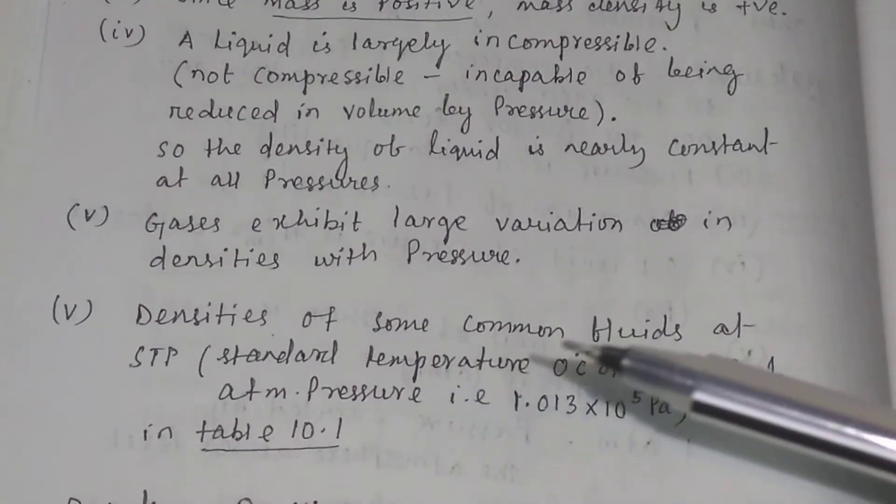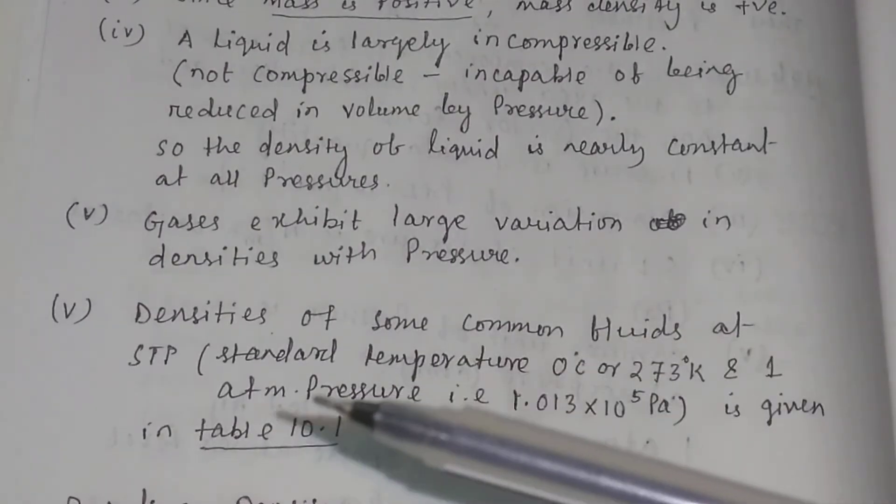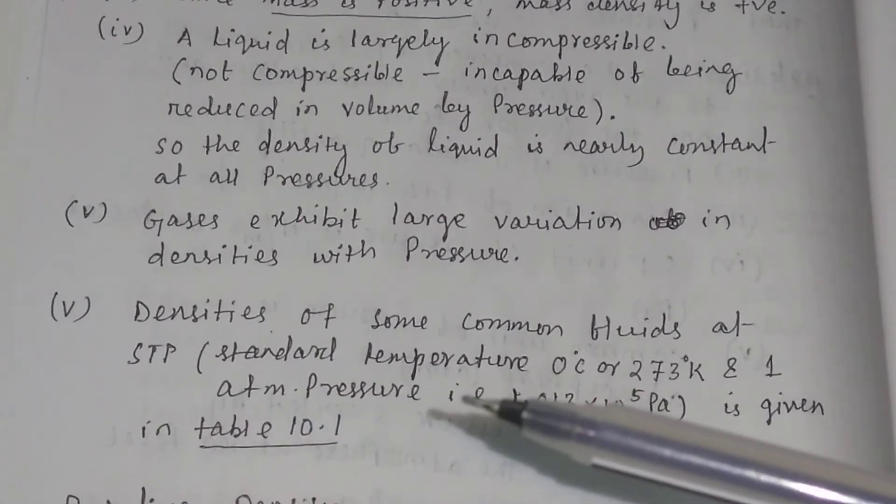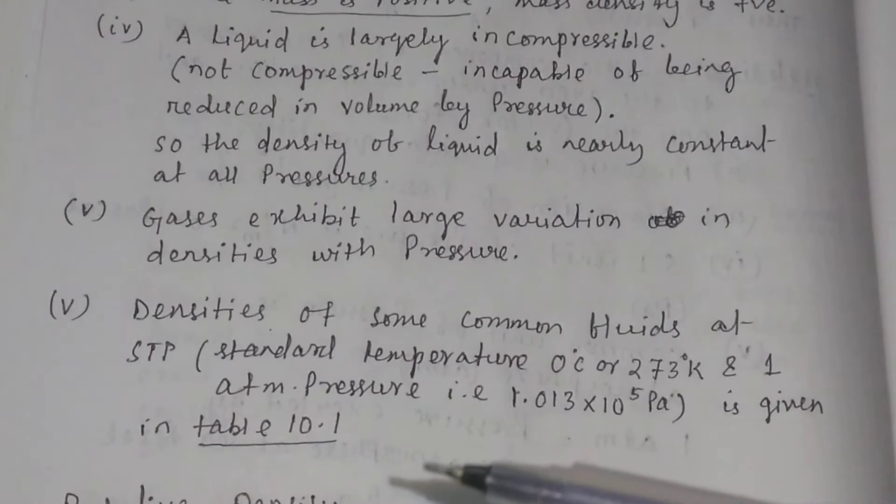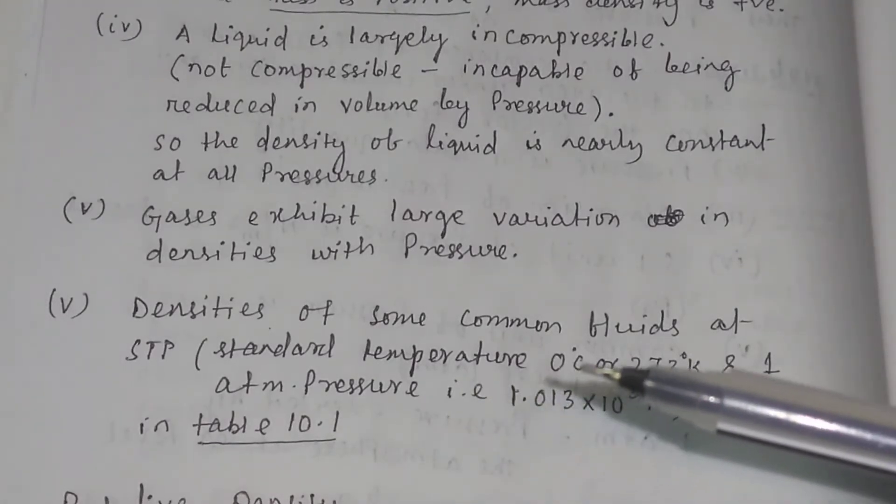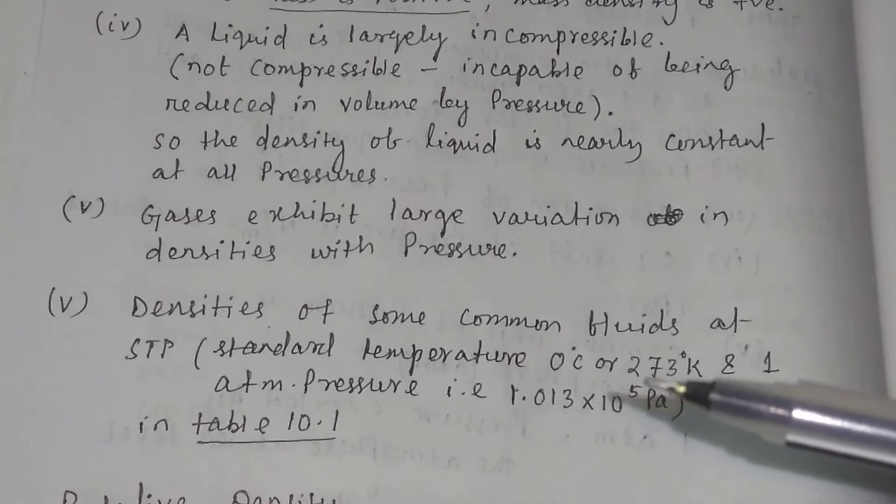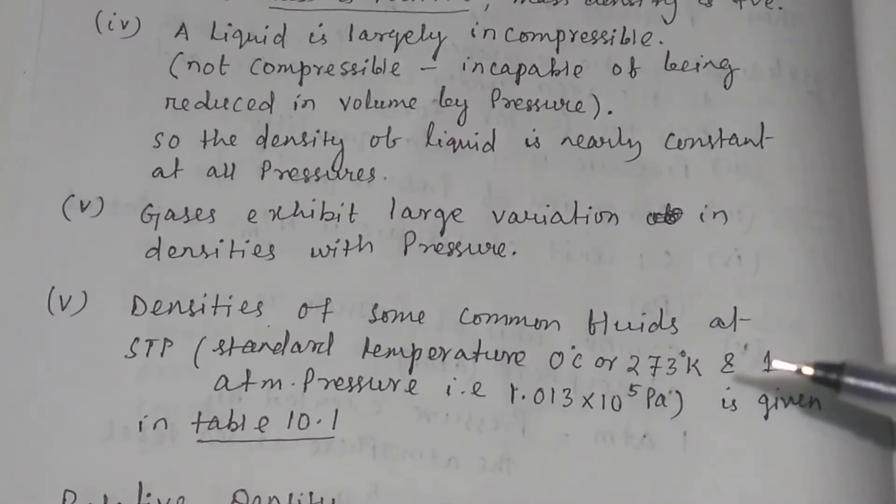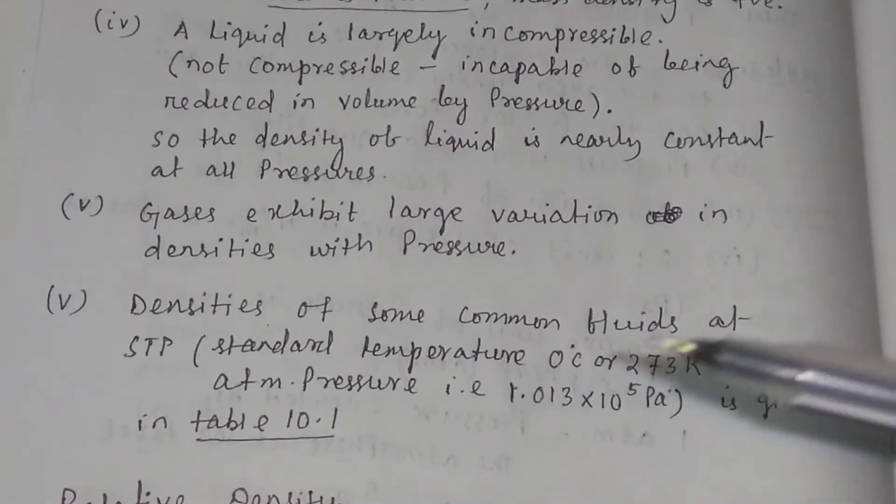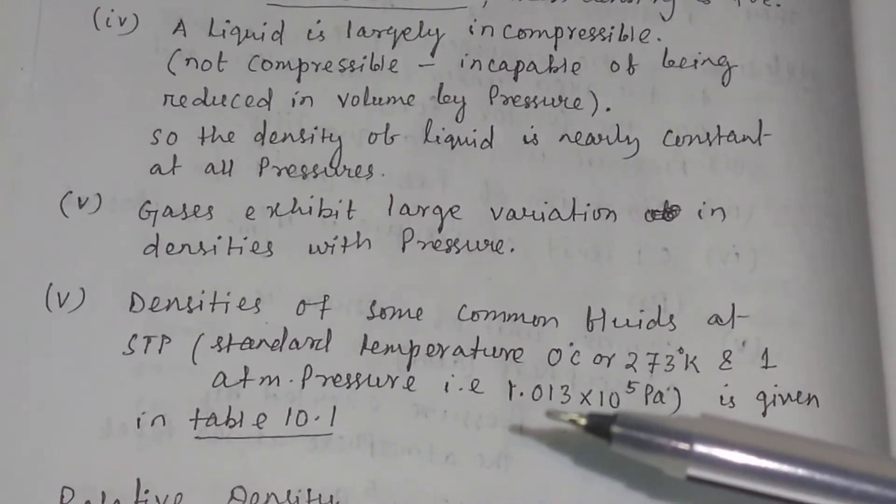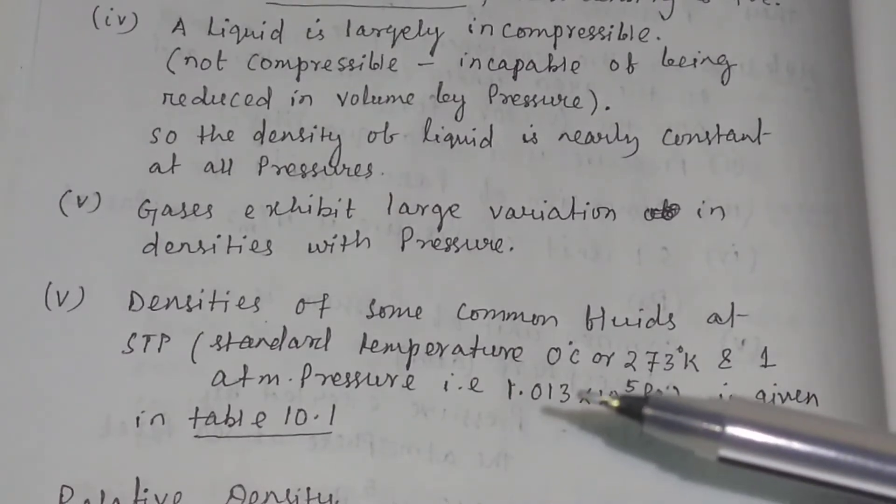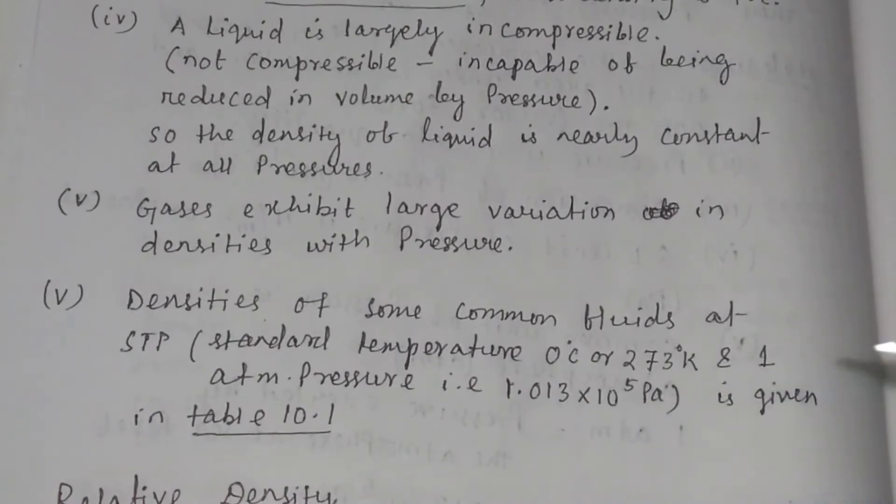The densities of some common fluids at STP, i.e. standard temperature and pressure, is given in this table. Standard temperature means at 0 degree centigrade or 273 degree Kelvin. And standard pressure means 1 atmospheric pressure. 1 atmospheric pressure is equal to 1.013 into 10 to the power 5 Pascal.